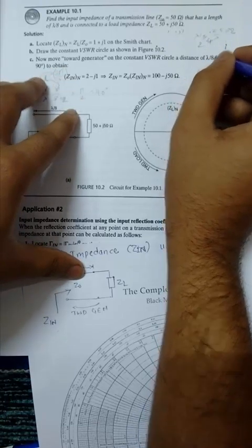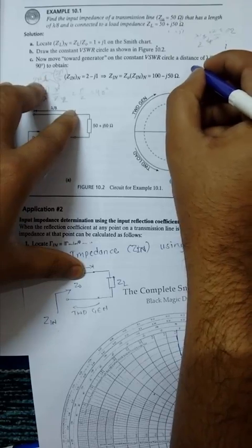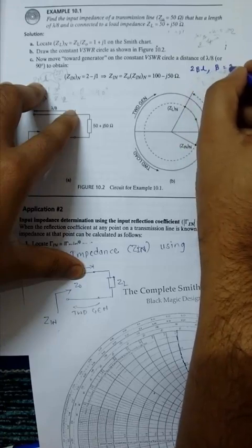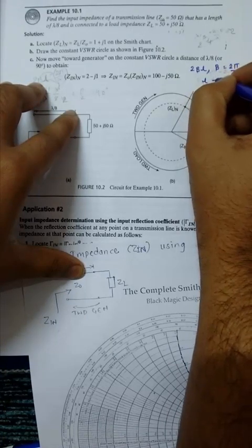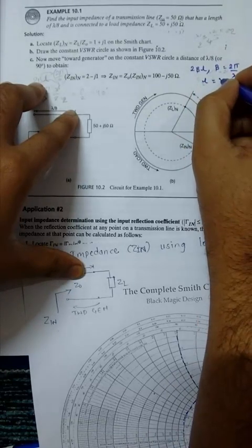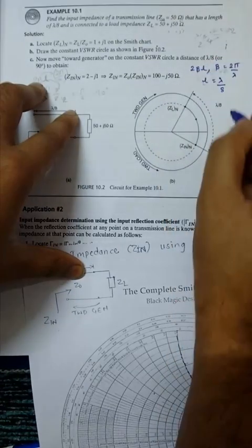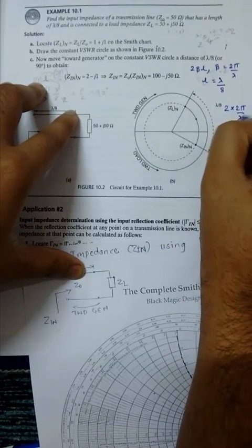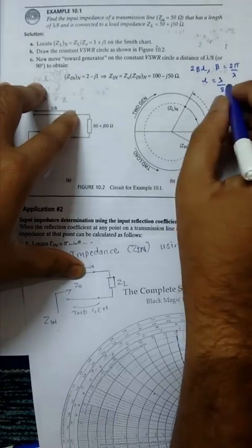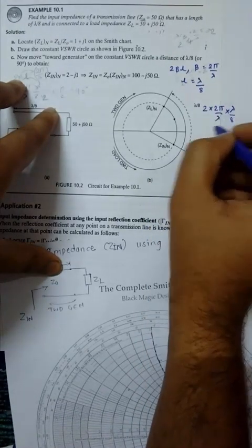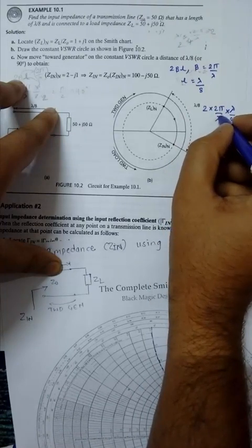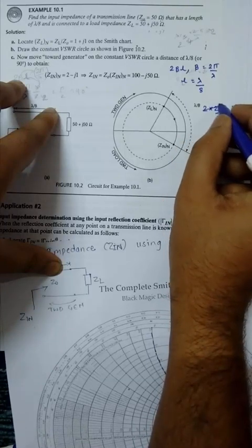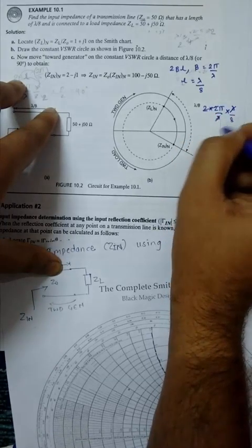How to calculate this distance lambda by 8? We know that rotation is 2 beta L, where beta equals 2 pi by lambda and L equals lambda by 8. Just put here 2 beta L, then you get 2 times 2 pi by lambda times lambda by 8. Lambda gets canceled and you get pi by 2, which equals 90 degrees.